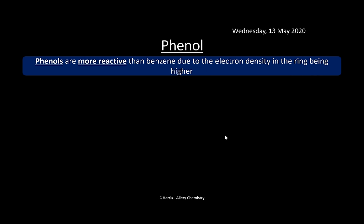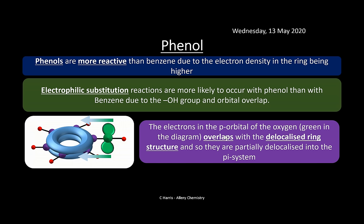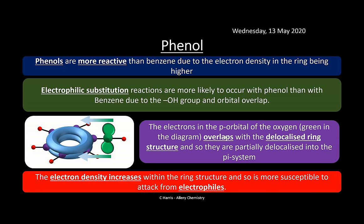Phenols are more reactive than benzene due to higher electron density in the ring, caused by the –OH group. The electrons in the p orbital of the oxygen in the –OH group overlap with the delocalized ring structure and are partially delocalized into the pi system. This increases electron density within the ring, making it much more susceptible to attack from electrophiles, so electrophilic substitution reactions occur much more readily with phenol than benzene.